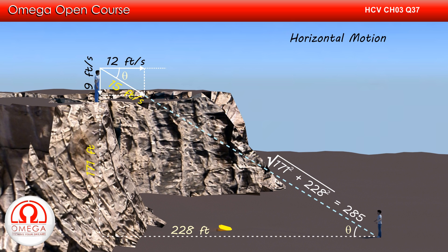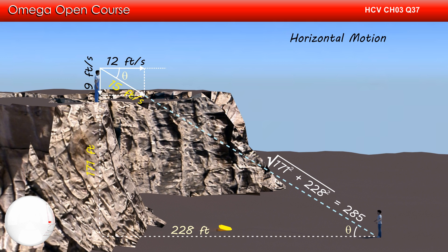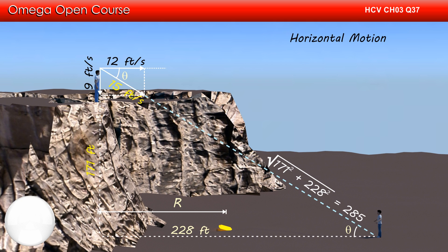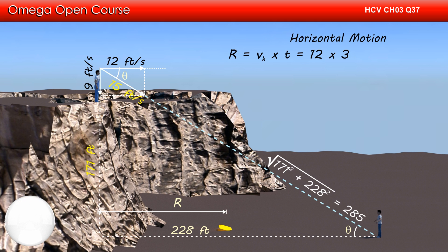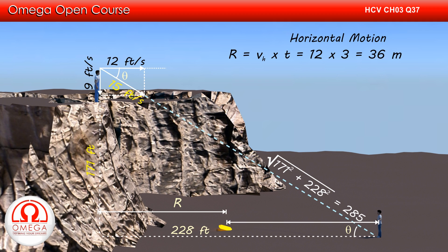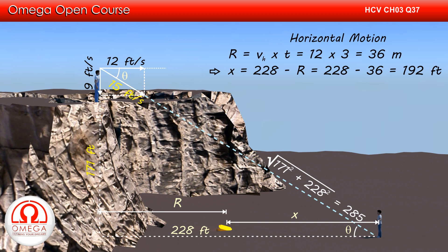Now let us look at the horizontal motion of the projectile. As there is no force in the horizontal direction, there is no acceleration and hence the horizontal motion is uniform. The horizontal distance travelled by the projectile equals horizontal speed multiplied by time of flight, i.e., 12 × 3 = 36 feet. Thus the distance of the packet from the person standing is 228 − 36 = 192 feet.